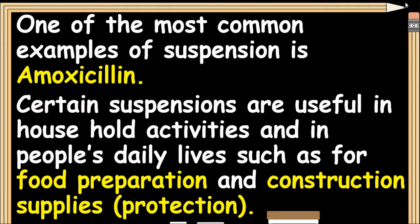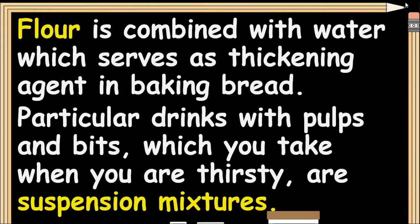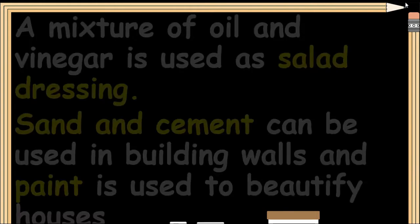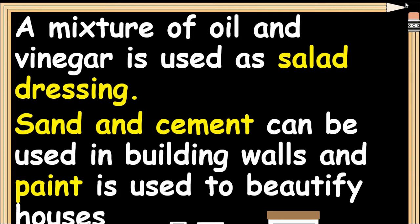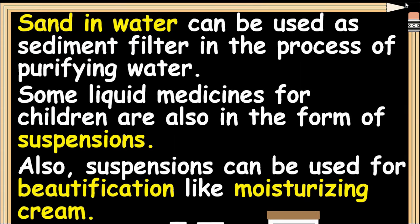Certain suspensions are useful in household activities and in people's daily lives, such as for food preparation, construction supplies, or protection. Flour is combined with water to serve as a thickening agent in baking bread. Particular drinks with pulp which you take when thirsty are suspension mixtures. A mixture of oil and vinegar is used as salad dressing. Sand and cement can be used in building walls, and paint is used to beautify houses. Sand in water may be used as a sediment filter in the process of purifying water. Some liquid medicines for children are also in the form of suspensions, and suspensions can be used for beautification like moisturizing cream.